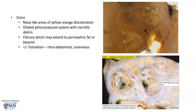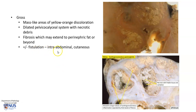We can see here these whitish areas of fibrosis, and this may extend beyond the renal capsule into the perinephric fat. In severe cases, there may even be fistula formation with intra-abdominal organs and even the skin.